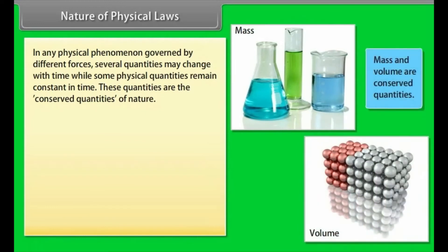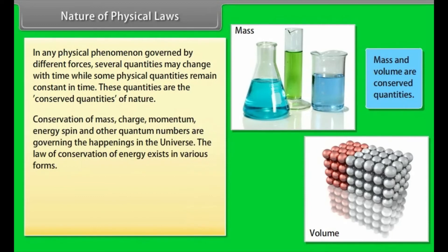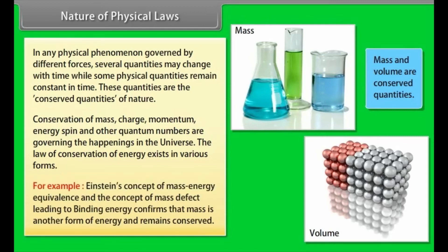Nature of physical laws. In any physical phenomenon governed by different forces, several quantities may change with time while some physical quantities remain constant in time. These quantities are the conserved quantities of nature. Conservation of mass, charge, momentum, energy, spin, and other quantum numbers are governing the happenings in the universe. The law of conservation of energy exists in various forms. For example, Einstein's concept of mass-energy equivalence and the concept of mass defect leading to binding energy confirms that mass is another form of energy and remains conserved.